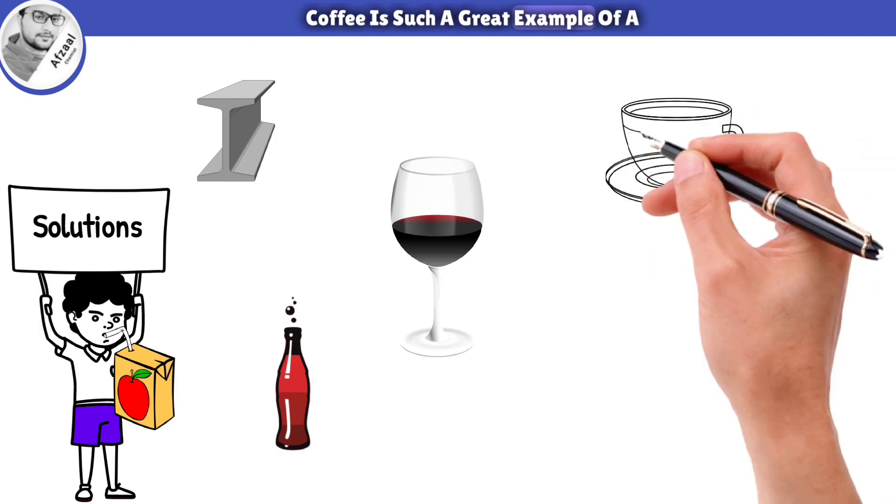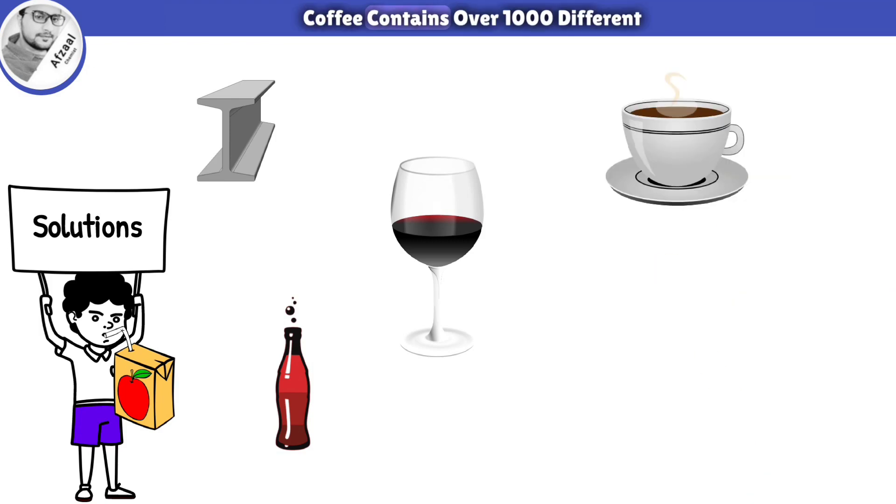Coffee is such a great example of a solution. Coffee contains over 1000 different chemical compounds, including caffeine, antioxidants, and other flavor molecules.